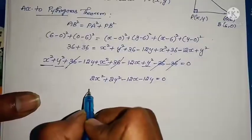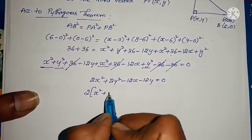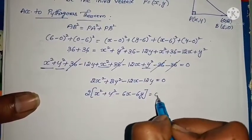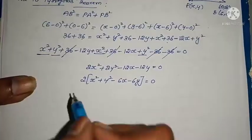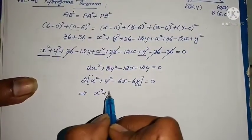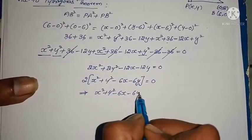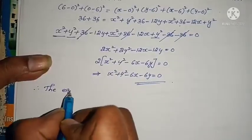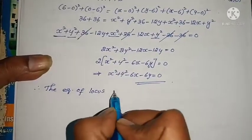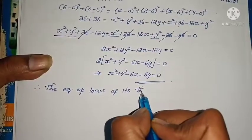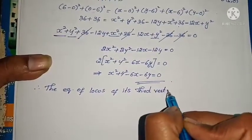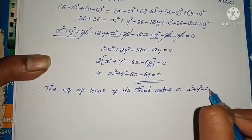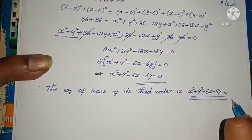Taking 2 as common factor: x² + y² - 6x - 6y = 0. Therefore, the equation of the locus of the third vertex is x² + y² - 6x - 6y = 0. This is a simple problem solved using the distance formula and (a ± b)² formulas.